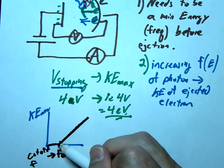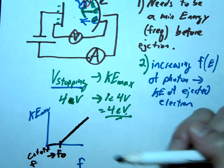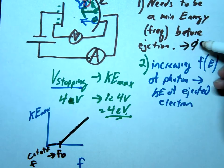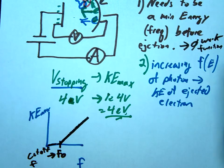By the way, this minimum frequency here, this is what we could use to figure out the work function phi. We would just do that using H times F0. That would give us our work function. That's the minimum energy needed to eject.